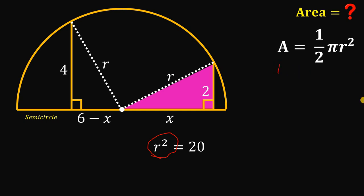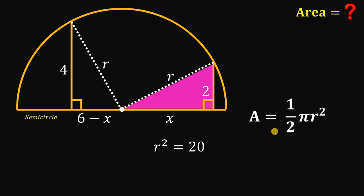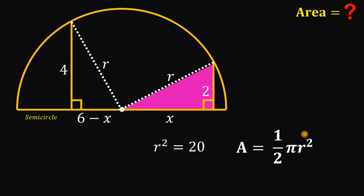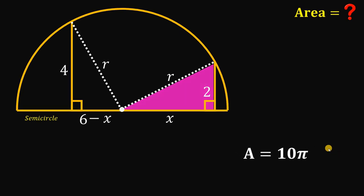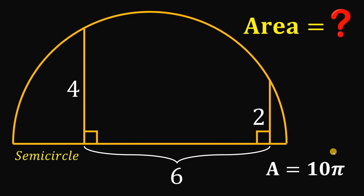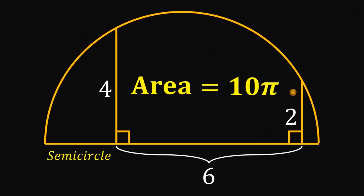Take note that our goal is to find the area of the semicircle, which is equivalent to one half times pi r squared. We know r squared equals 20, so we can replace r squared with 20. One half times pi times 20 gives us 10 pi. Therefore, the area of the semicircle must be equal to 10 pi square units. That is the answer to this question, and as always, we are done.